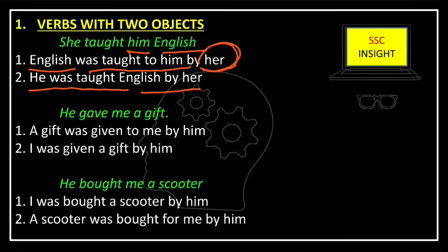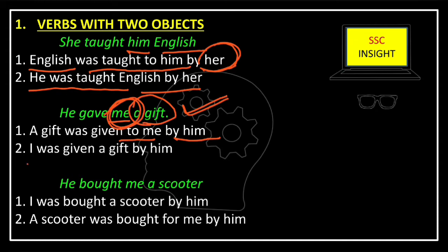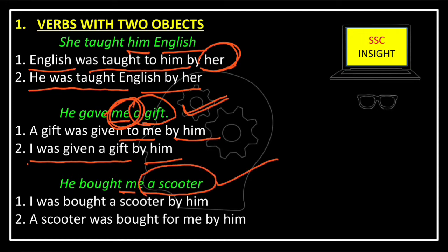Similarly, 'He gave me a gift' — here 'me' and 'a gift' are both objects. If we consider 'a gift,' the passive voice will be 'A gift was given to me by him,' and if we consider 'me' as the subject in passive voice, it will be 'I was given a gift by him.' Similarly, 'He bought me a scooter' — 'me' and 'a scooter' are objects. Passive forms: 'I was bought a scooter by him,' or 'A scooter was bought for me by him.'